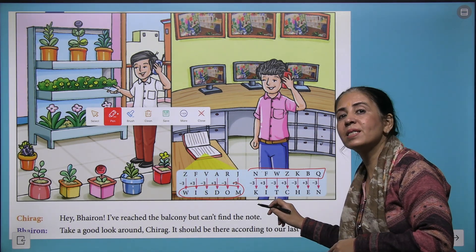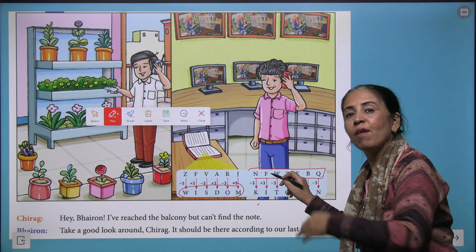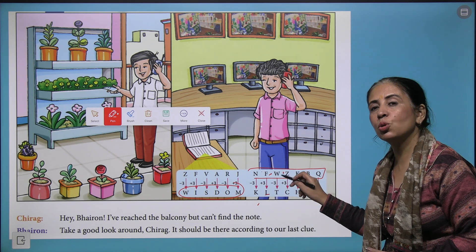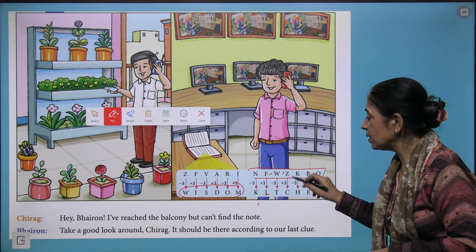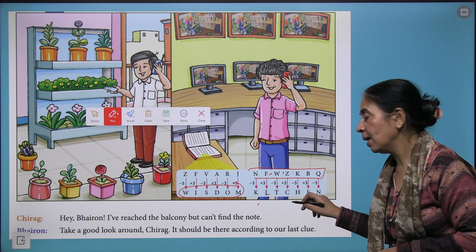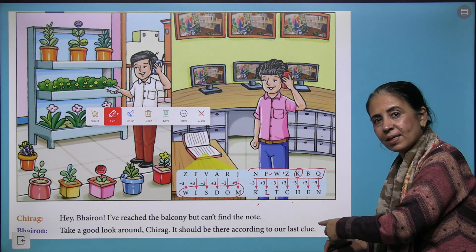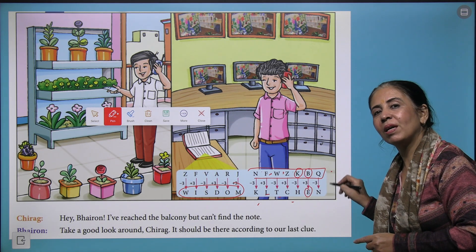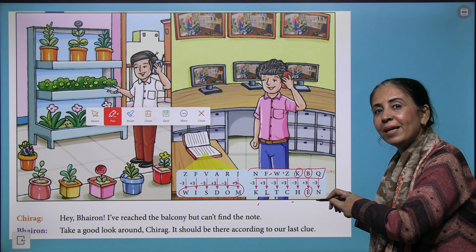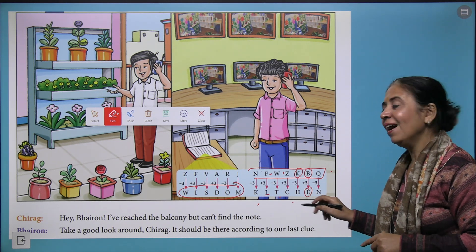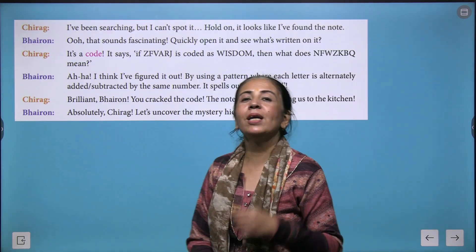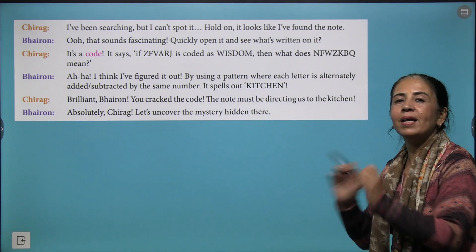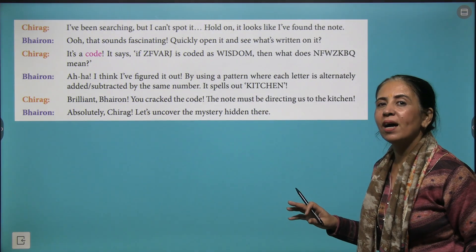Now the same symmetry has to be followed to decode this message. So N minus 3 becomes K, F plus 3 gives you I, W minus 3 turns to T, Z plus 3 gives you C. Similarly, K minus 3 is H, B plus 3 gives you E, and Q minus 3 gives you N. What's the message here? Your next treasure is in the kitchen. Interesting way to convey the message!